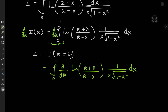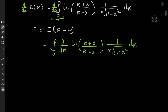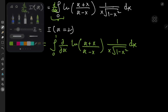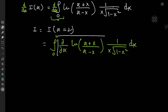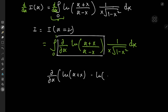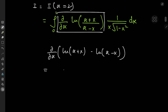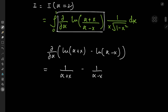Since we're differentiating partially with respect to alpha, the x terms are treated as constants. Using properties of the natural logarithm, we write the log as log(alpha + x) minus log(alpha - x), giving the derivative as 1/(alpha + x) minus 1/(alpha - x). Simplifying, we get (alpha - x - alpha - x)/(alpha² - x²), which reduces to -2x/(alpha² - x²).